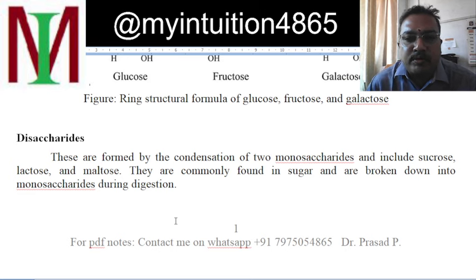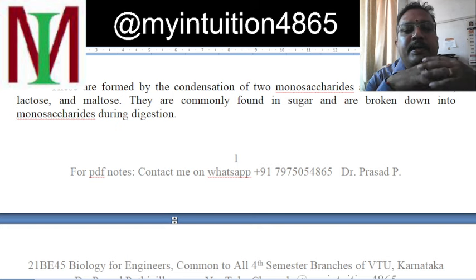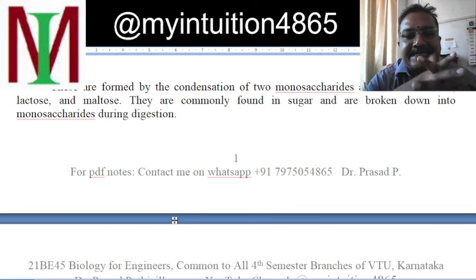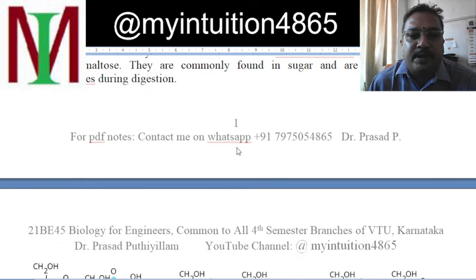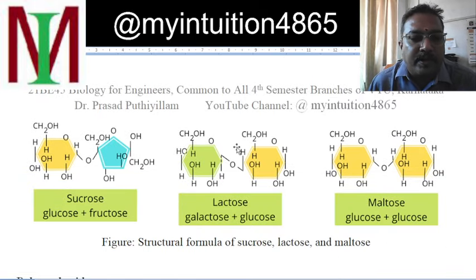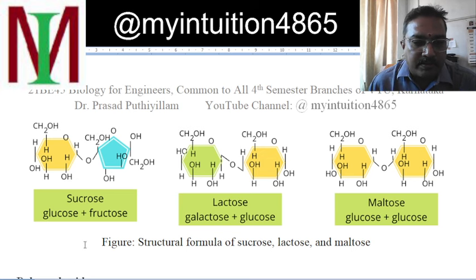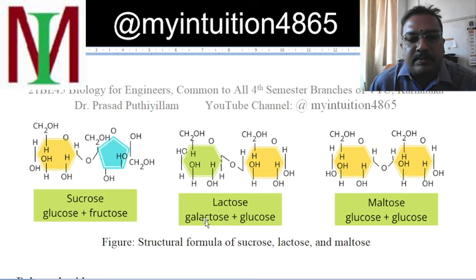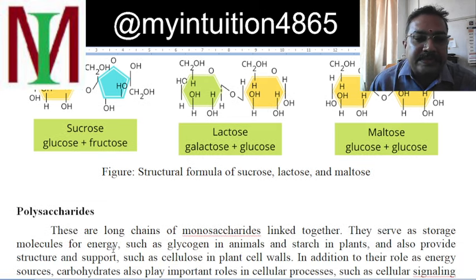Disaccharide means when two monosaccharides condense and join together to become one saccharide molecule, we call it a disaccharide. It is commonly found in sugar and can be easily broken down to monosaccharides during digestion in our stomach. For example, sucrose consists of glucose and fructose combined. Lactose is galactose and glucose combined. Maltose is glucose and glucose combined.